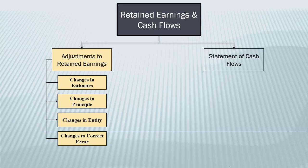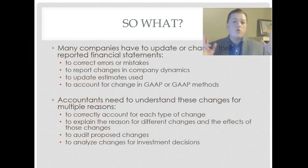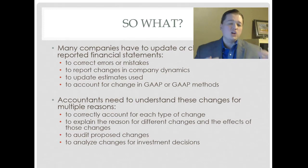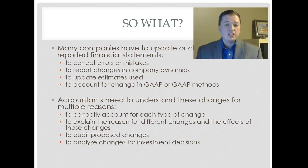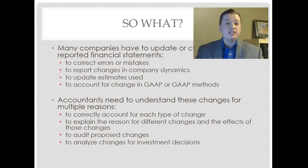Before we jump in, I want to take a few minutes to talk about why we should care about changes in our financial system and the adjustments they cause to retained earnings. We like to think about accounting numbers as being right — the balance sheet balances, the statement of cash flows balances with the cash number in the balance sheet, the statement of retained earnings matches our closing entry, and the income statement matches our income summary. It all balances perfectly, so it must be right. Well, no, not really.